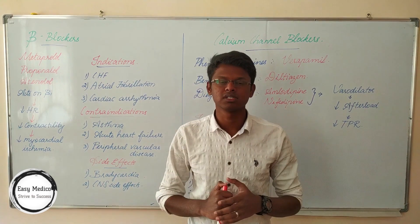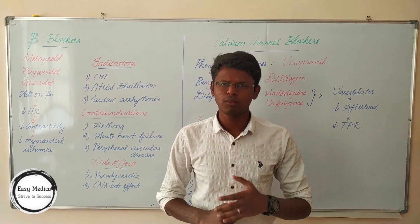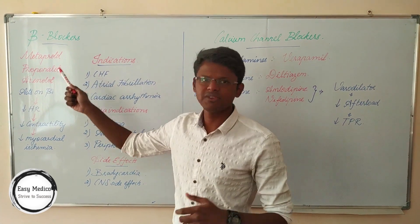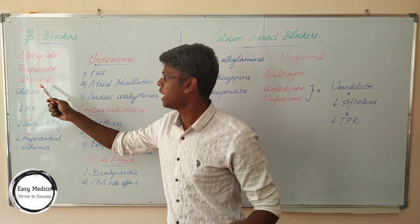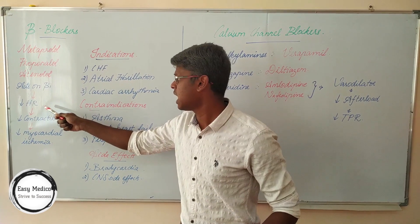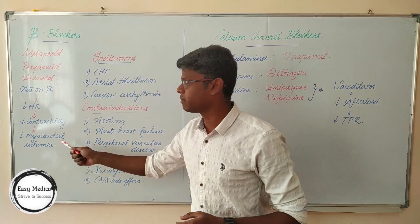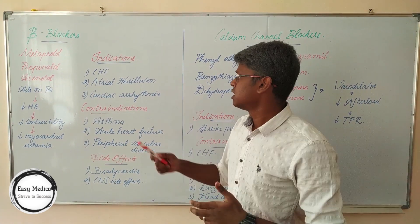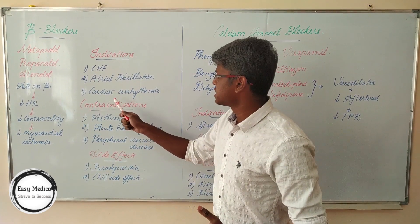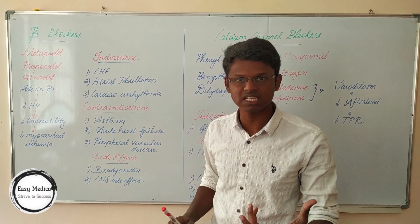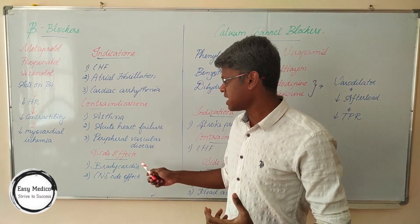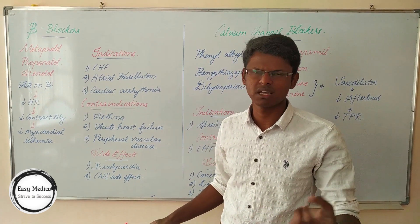Now let us discuss beta blockers and calcium channel blockers — their mechanisms of action, side effects, contraindications, and indications. Examples of beta blockers are metoprolol, propranolol, and atenolol. Their mechanism of action: they act on beta-1 receptors, which act on the heart, leading to a decrease in heart rate and decreased contractility, which ultimately leads to a decrease in myocardial ischemia. Indications include congestive heart failure, atrial fibrillation, and cardiac arrhythmia. Contraindications include asthma, acute heart failure, and peripheral vascular disease. Side effects include bradycardia, insomnia, and fatigue.